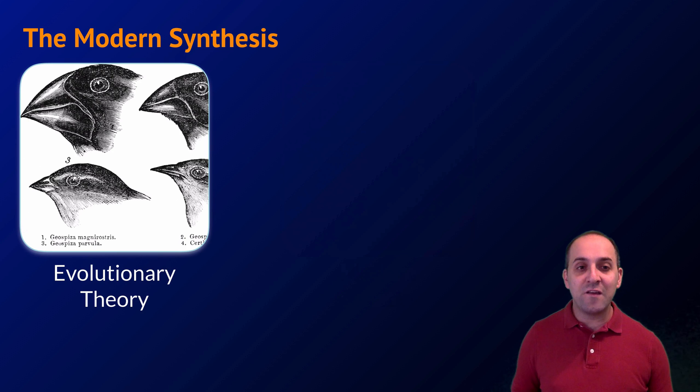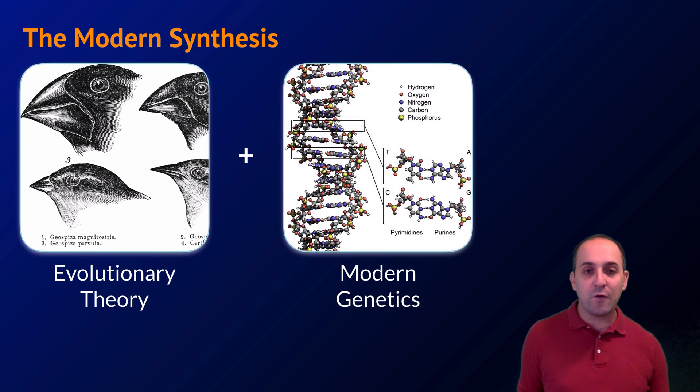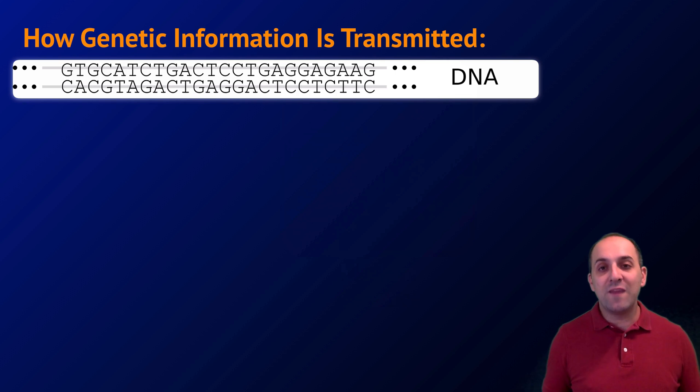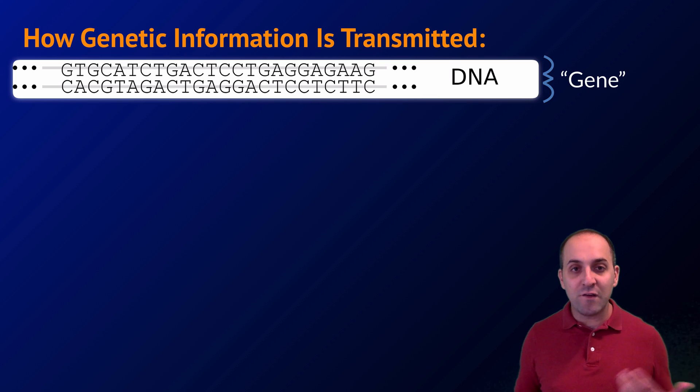As I said at the beginning, the modern synthesis is simply taking evolutionary theory and connecting it to modern genetics. Let's pause and make sure that we're all on the same page with regard to our understanding of modern genetics. Genetic information is stored in molecules of DNA in every cell on the planet. We can think of that DNA as being broken up into a series of instructions that we refer to as genes.